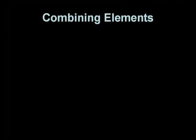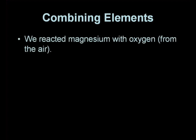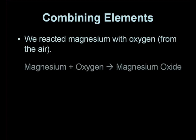To recap what we've just seen in the video, we've looked at the reaction between magnesium and oxygen. The oxygen came from the air. The word equation for this reaction is magnesium plus oxygen goes to magnesium oxide. We can also write a symbol equation.